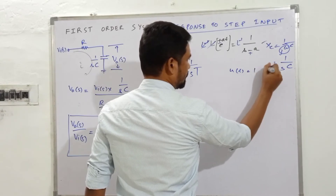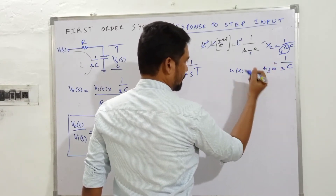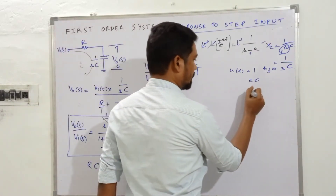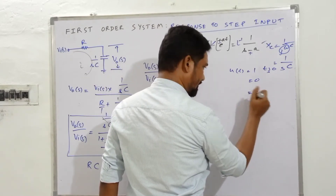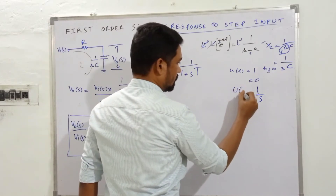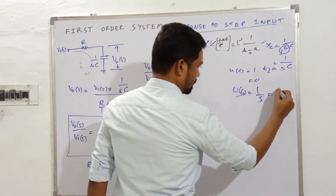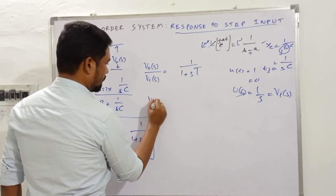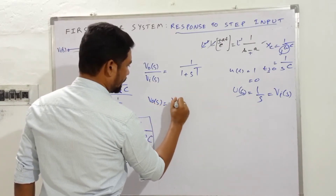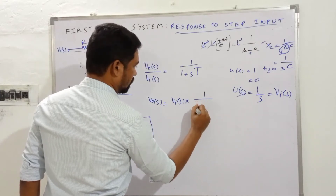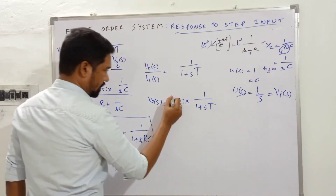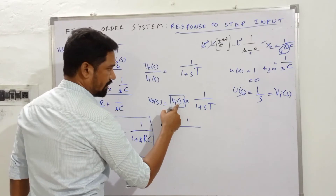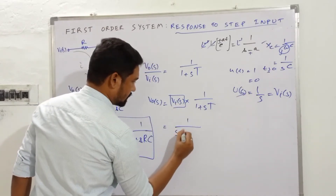The step input u(t) equals 1 for t ≥ 0. The analysis is carried out in the s-domain, and the Laplace transform of the step function is 1/s, so V_i(s) = 1/s. Substituting into the transfer function: V_out(s) = V_i(s) × 1/(1 + sT) = 1/(s(1 + sT)).